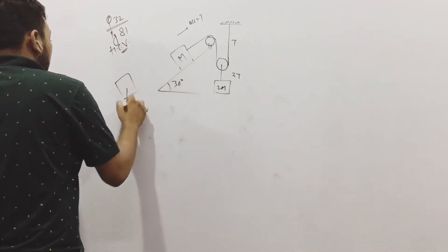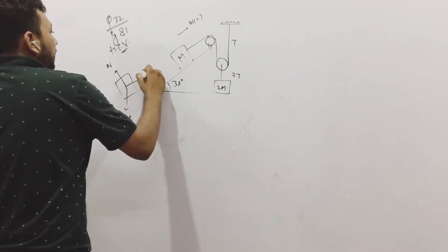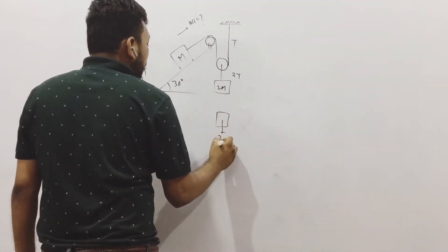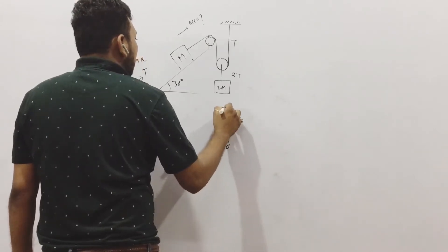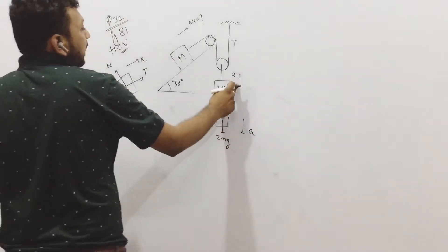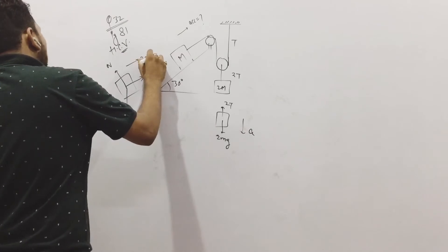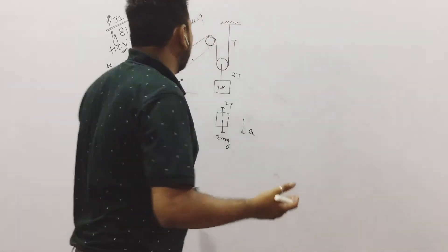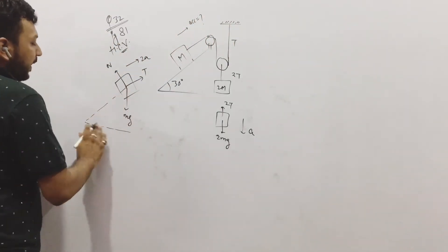You have mass M. So you see: M has weight MG, normal force, tension T, and acceleration. Then there is mass 2M with weight 2MG, tension 2T, and acceleration. Now, when 2T has acceleration A, then T will have acceleration 2A. You can explain this by two methods: the derivative method or the normal observation method. Now we can draw the free body diagram.